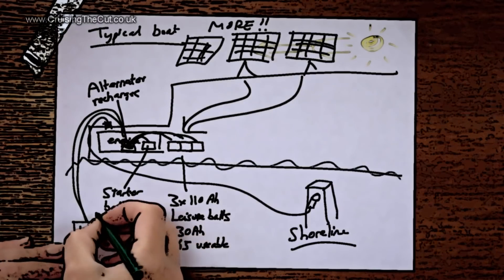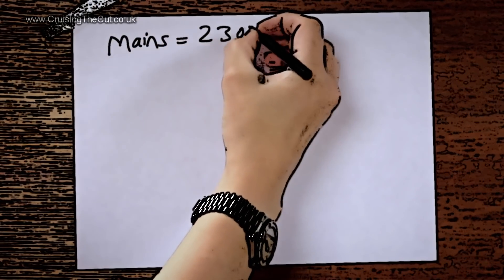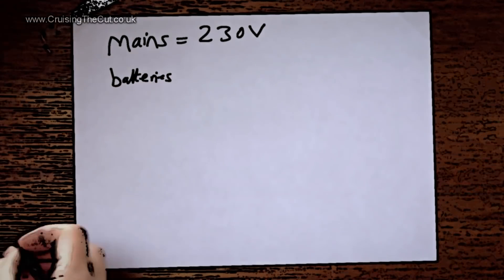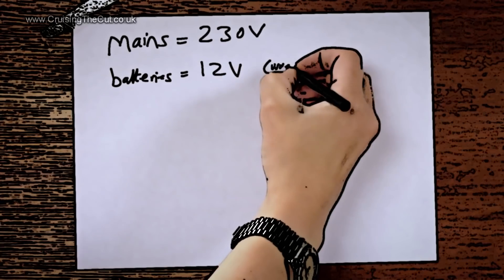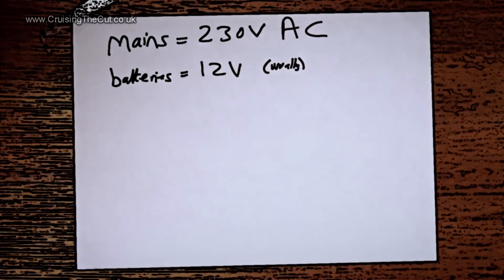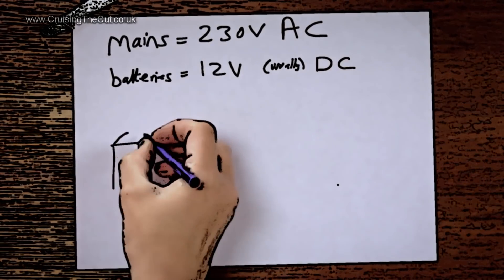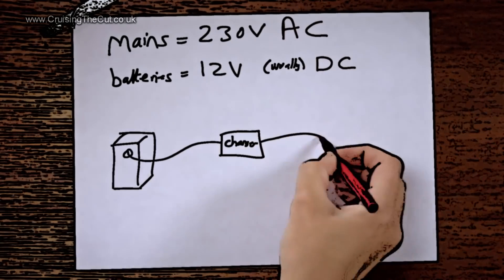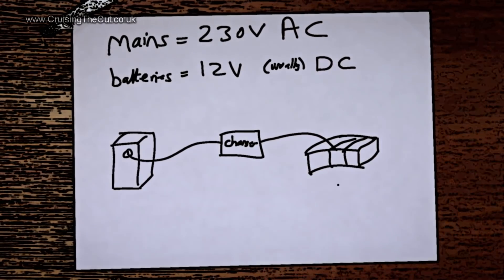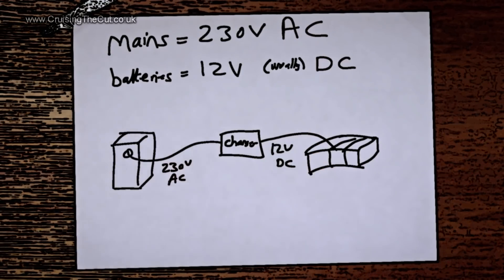The astute viewer will notice that mains electricity is 230 volts, but we've been saying the boat batteries are 12 volts. This is true. Also, mains is alternating current or AC, while the battery produces direct current known as DC. So when you plug into a shoreline, your charger takes the 230 volt AC mains and converts it down to 12 volts DC for the batteries. So why use 12 volts? Why not just have boats running 230 volts so it's like at home? Well, firstly, batteries are DC not AC, and secondly, they're not very good at producing high voltages unless you stack loads of batteries in a big long line, each one giving the next one along a bit more push.